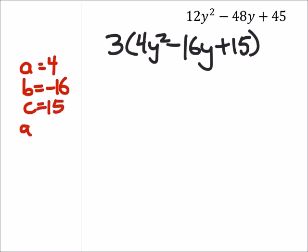So a times c is 4 times 15, that's 60. And when we factor this out, what did we get? Negative 6 and negative 10. So that's where we're going to split the negative 16y up into.